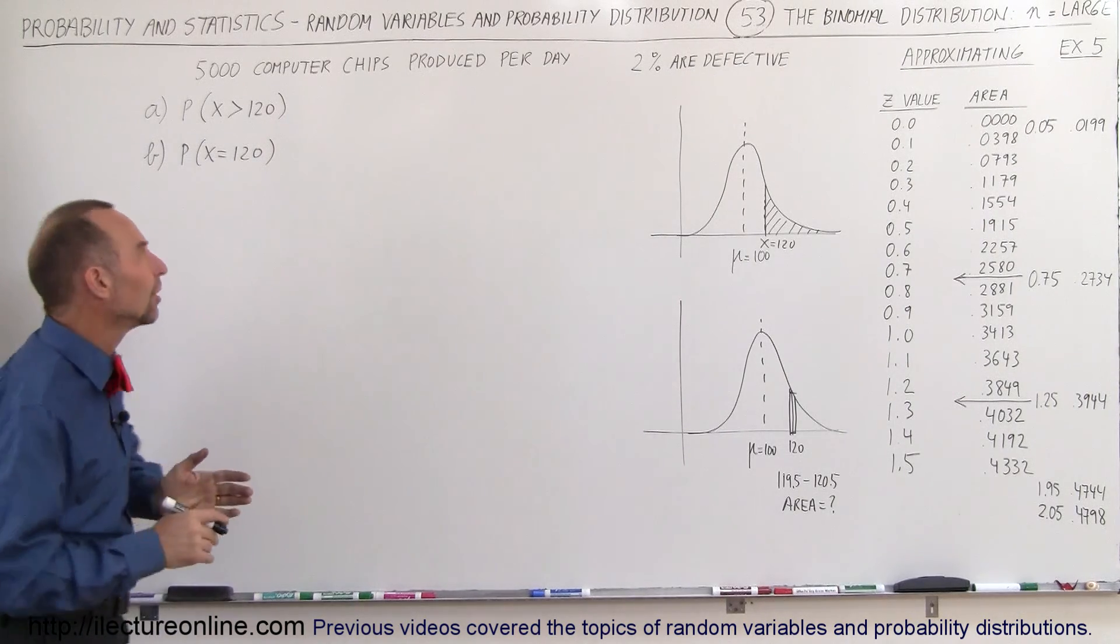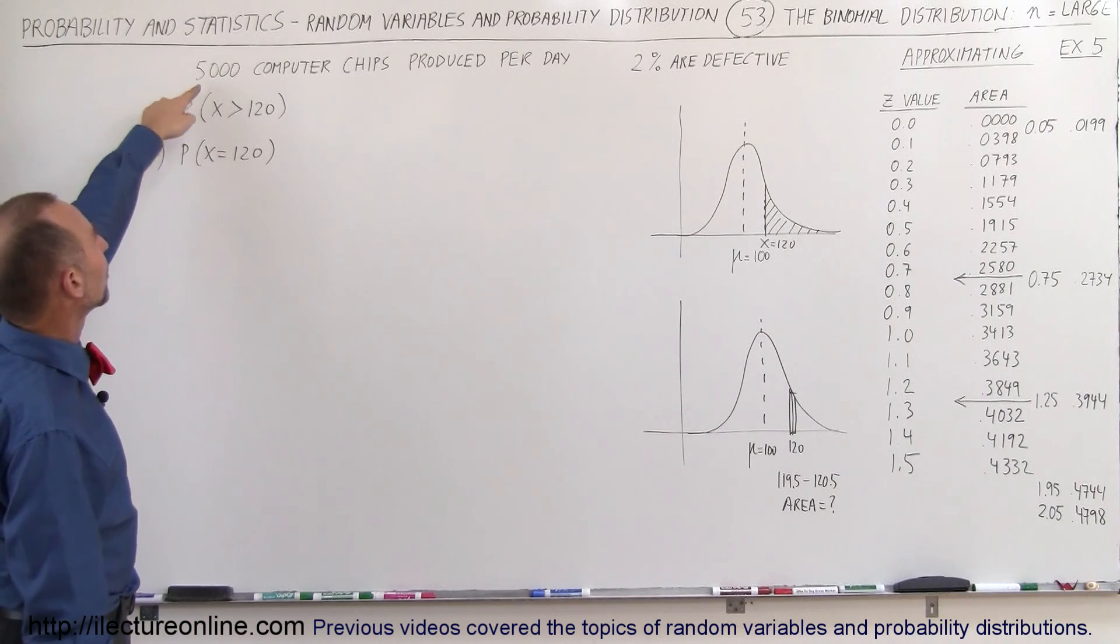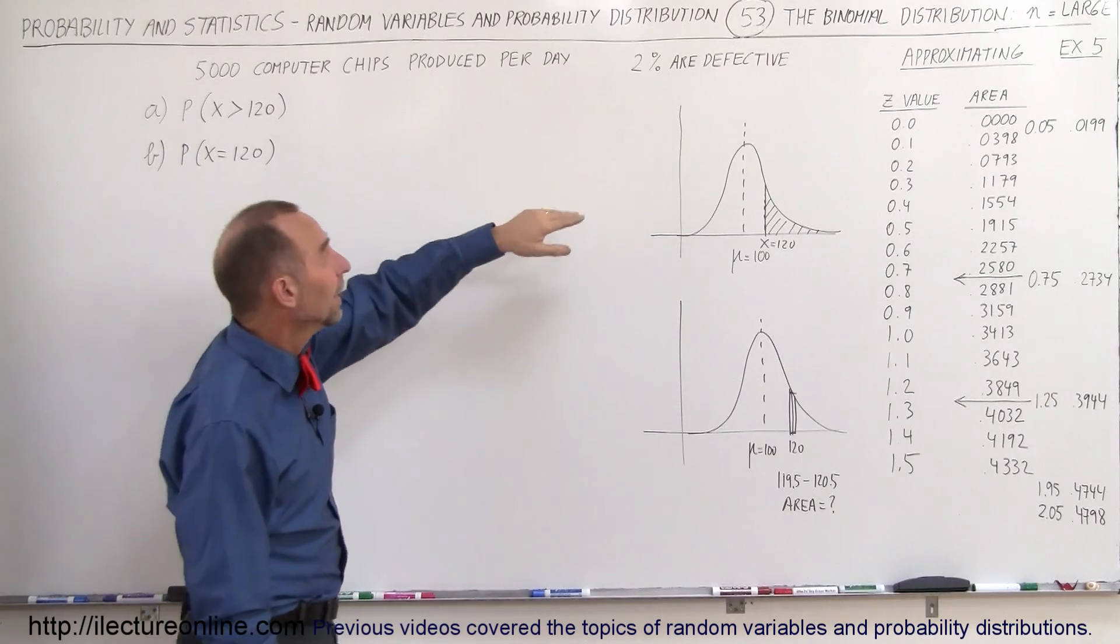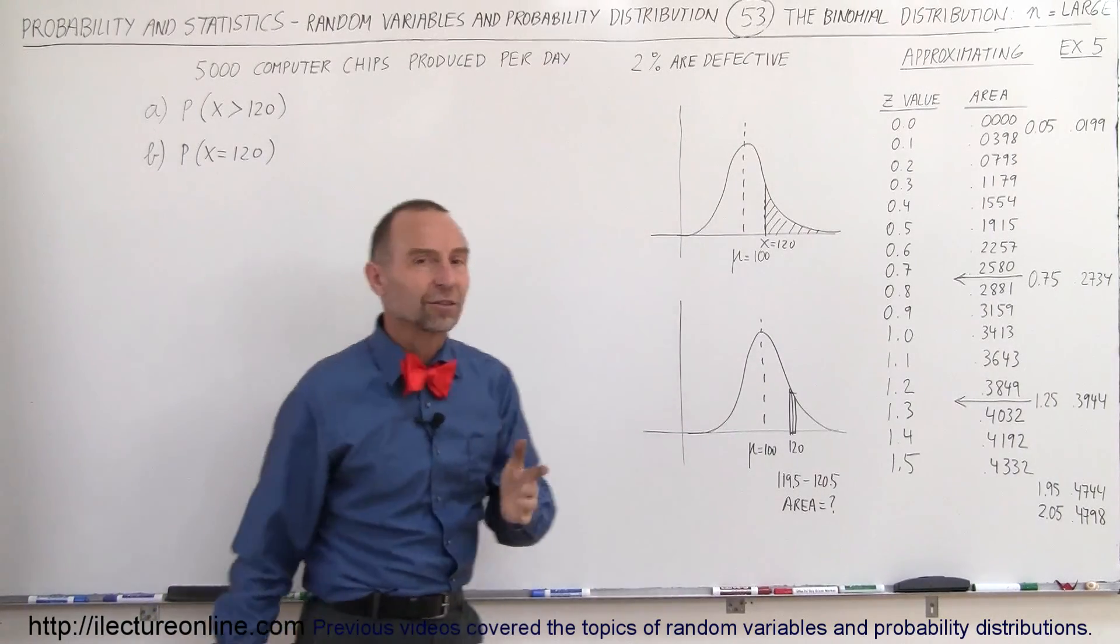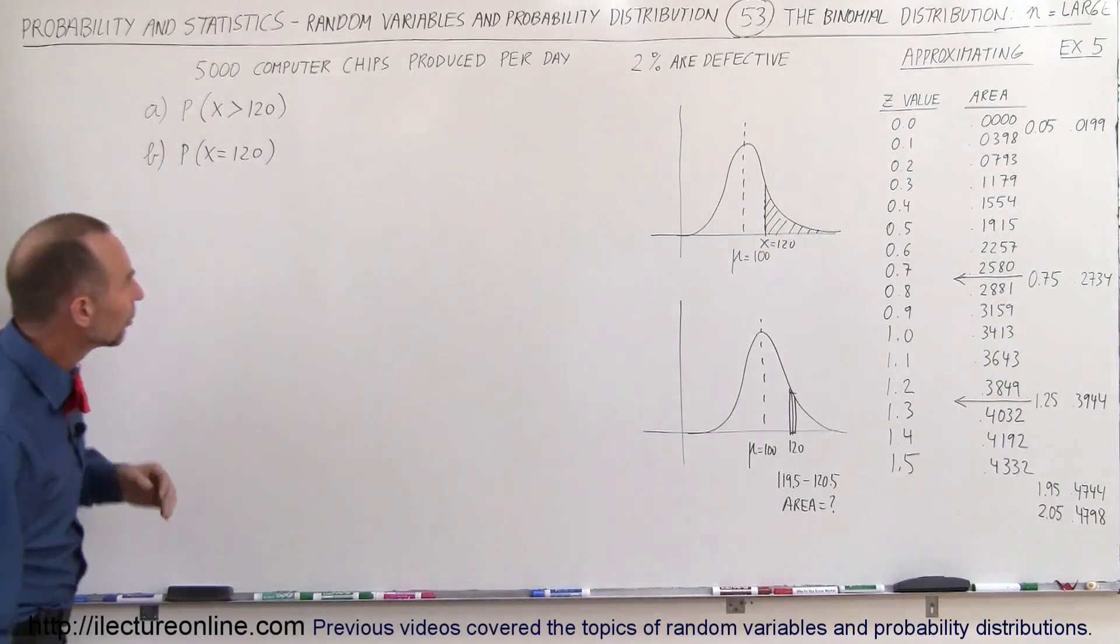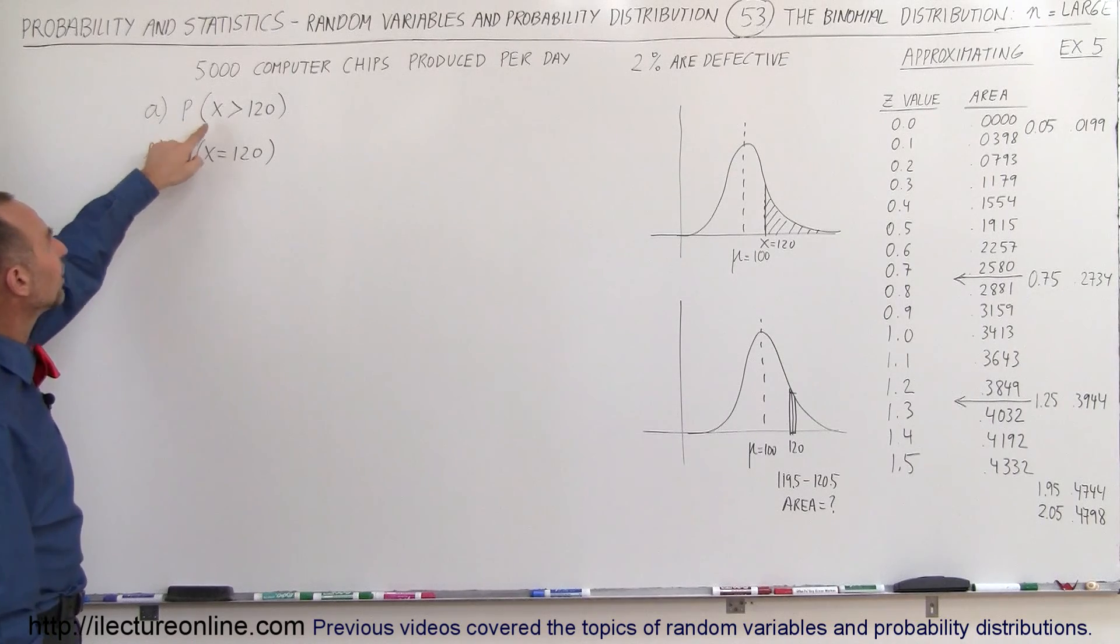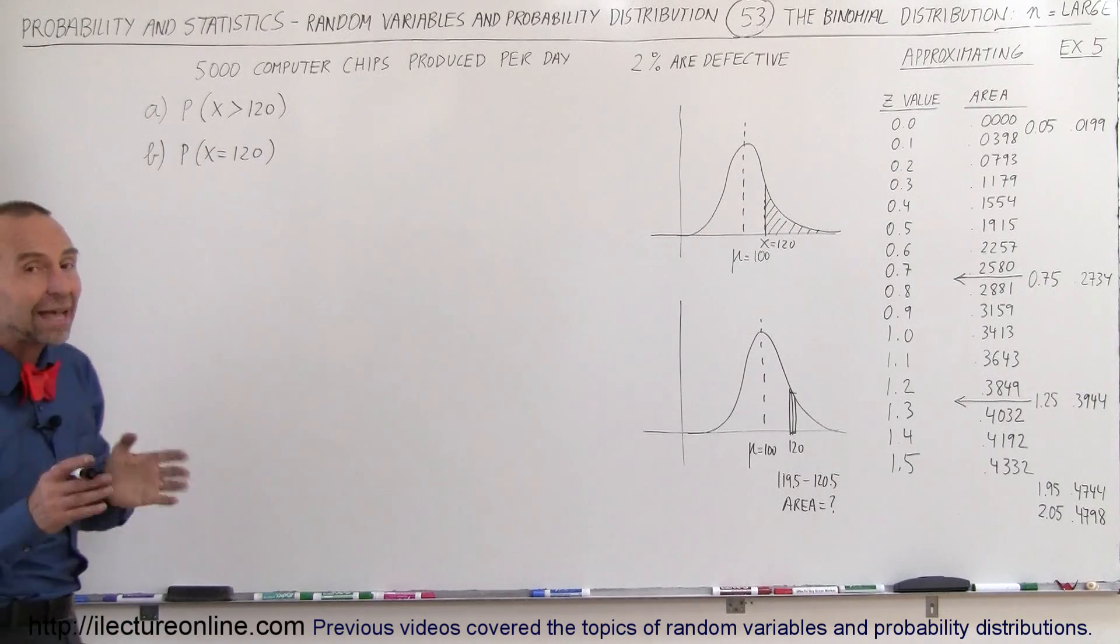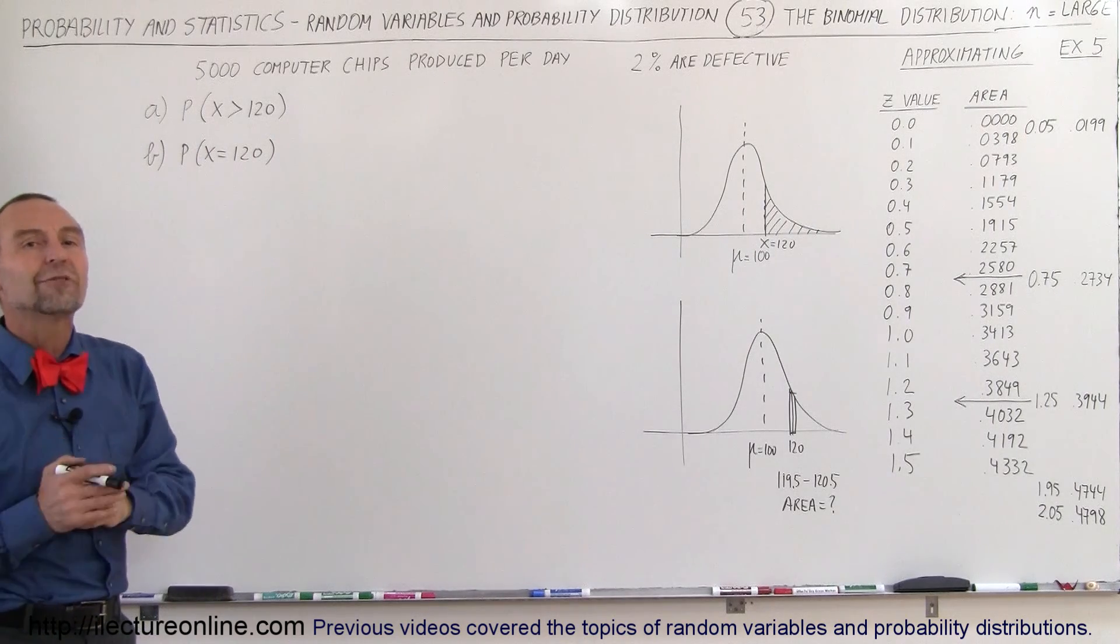The first one is something we're more familiar with. Let's start with producing 5,000 computer chips each day and let's say that 2% of those are defective. So the question is, what's the probability that more than 120 in a given day will be defective and what is the probability that exactly 120 of them will be defective?